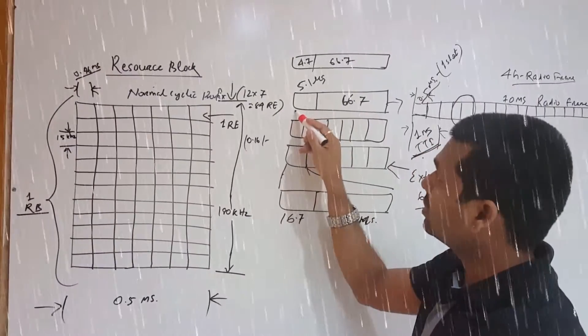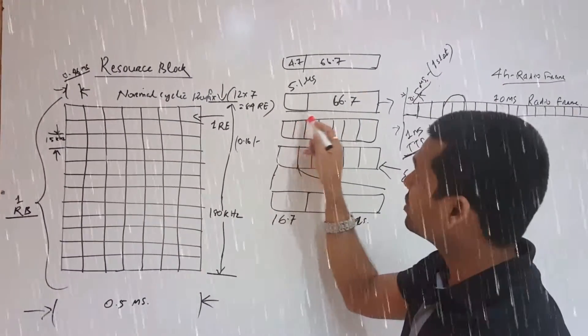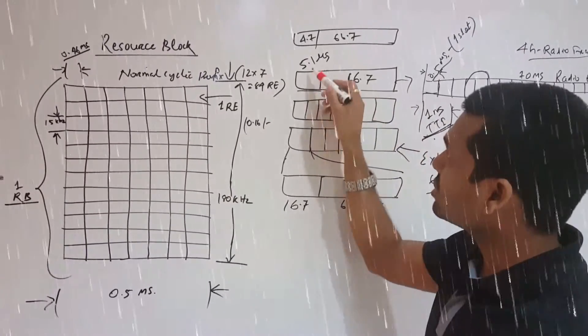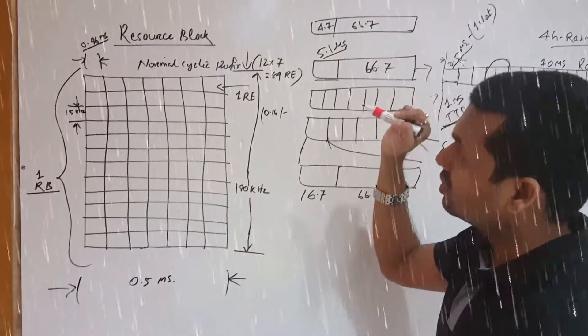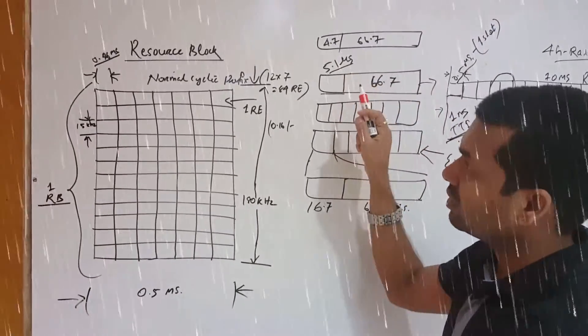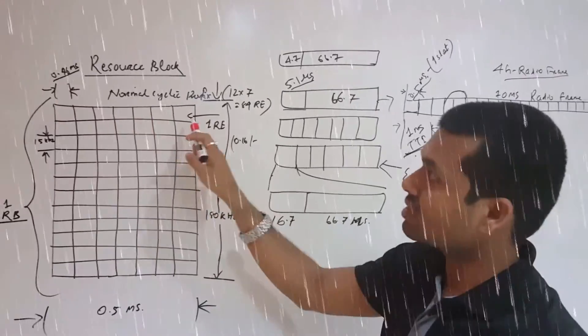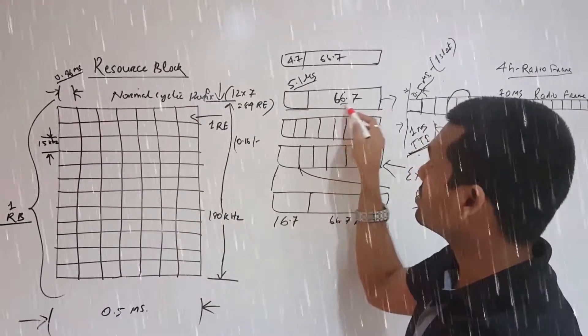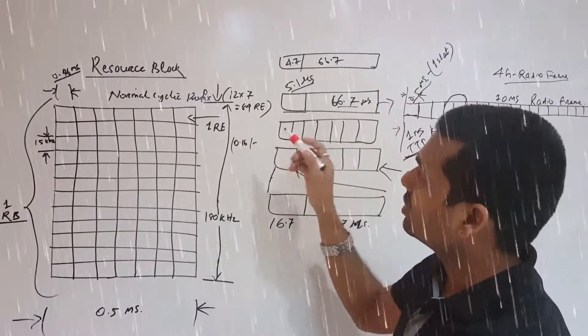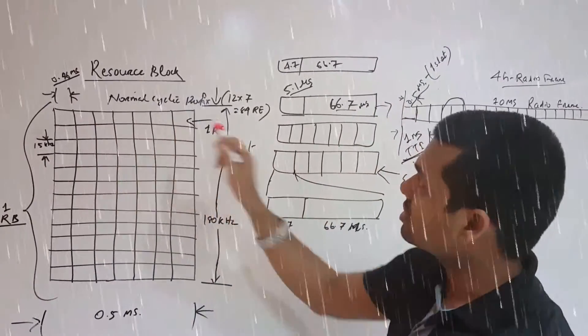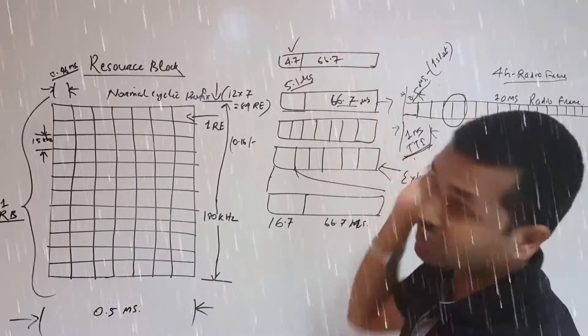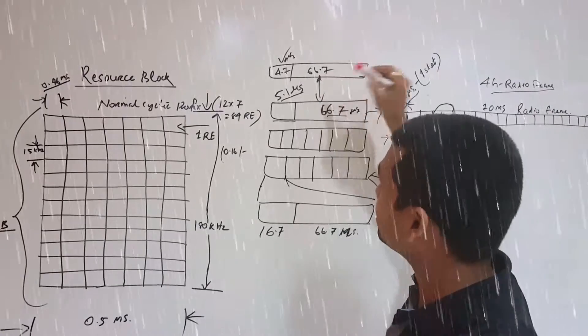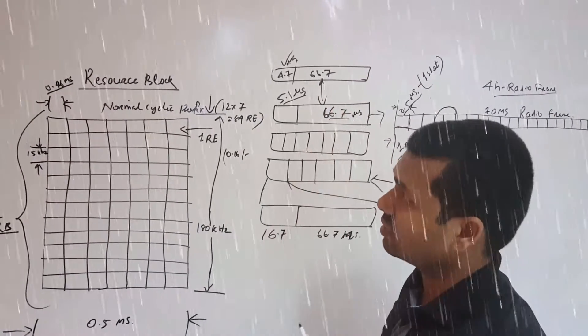In the symbol, this is the cyclic prefix and this is the symbol period. So this one is 5.1 microseconds in the first, then 66.7 microseconds. And 2nd to 6th we use 4.7 microseconds and 66.7 microseconds. The normal symbol wherein we send these modulation bits.